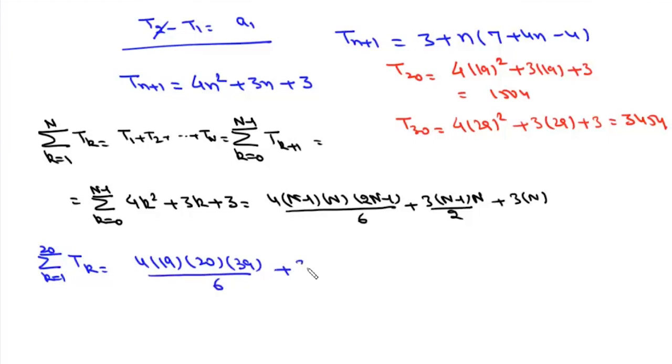It will be 4×19×20×39/6 + 3×19×20/2 + 3×20, and this value is 10510.